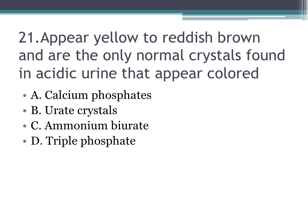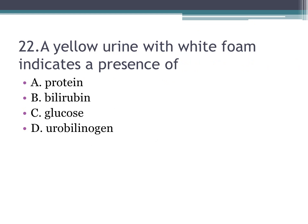Number twenty-one: appear yellow to reddish-brown and are the only normal crystals found in acidic urine that appear colored — A. calcium phosphates, B. urate crystals, C. ammonium biurate, D. triple phosphate. By elimination, only urate crystals are found in acidic urine. The rest are found in alkaline urine. The correct answer is B, urate crystals.